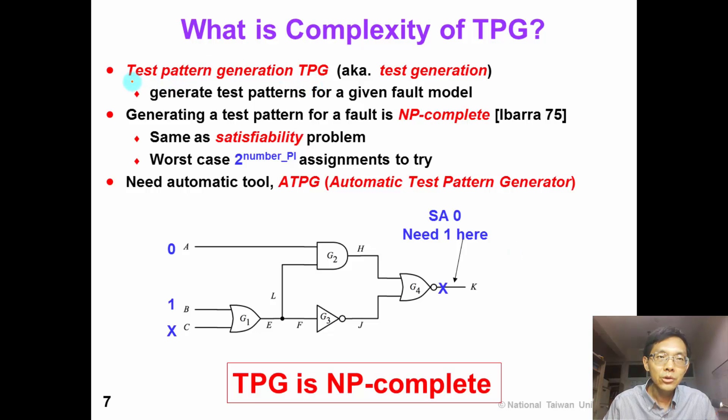Test pattern generation or TPG is also known as test generation. It generates test patterns for a given fault model. Generating a test pattern for a fault is shown to be an NP-complete problem in 1975. This is essentially the same as the satisfiability problem. For example, if we want to generate a stuck-at-0 fault here, we will need to find input such that the output k is equal to 1.